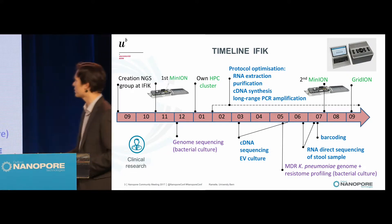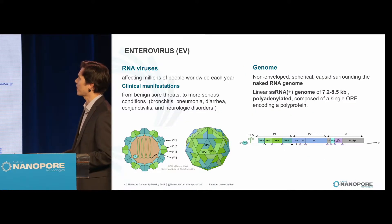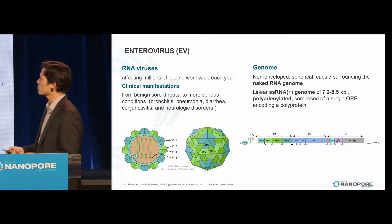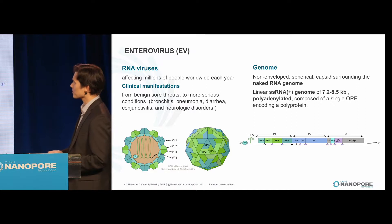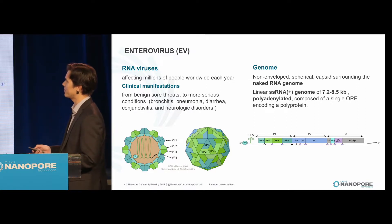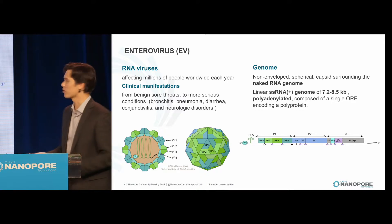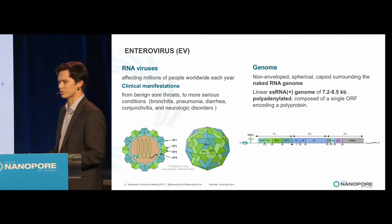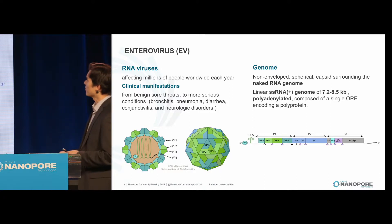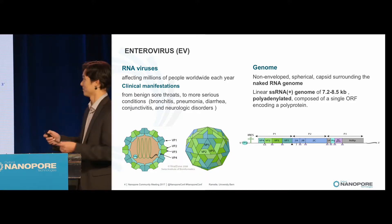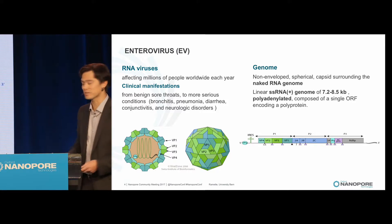One of those applications is enteroviral sequencing, because it's an interesting RNA virus that affects millions of people. Clinical manifestations are very broad, going from a sore throat to diarrhea, but also to neurologic disorders. The genome is about 7 to 8 kb, so it's very amenable to not only cDNA sequencing, but also direct RNA sequencing.